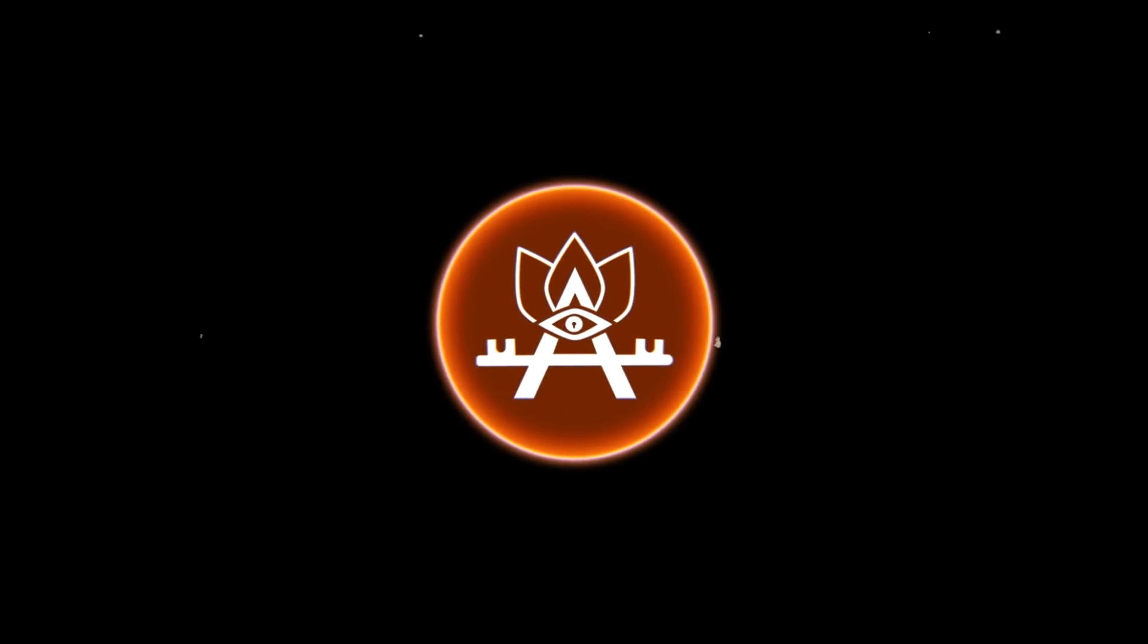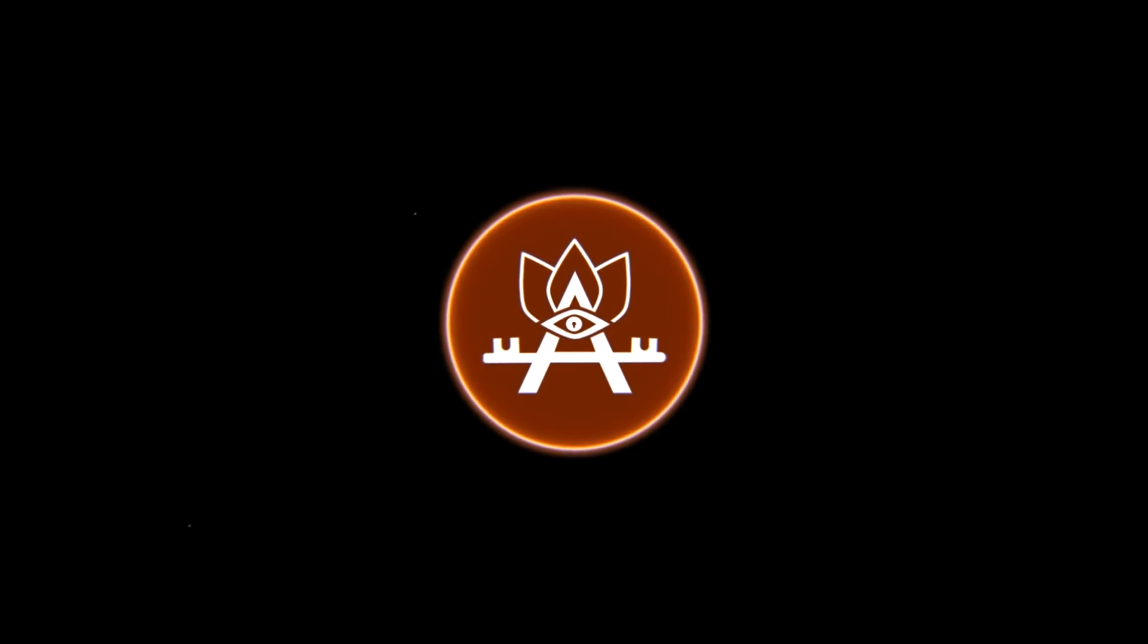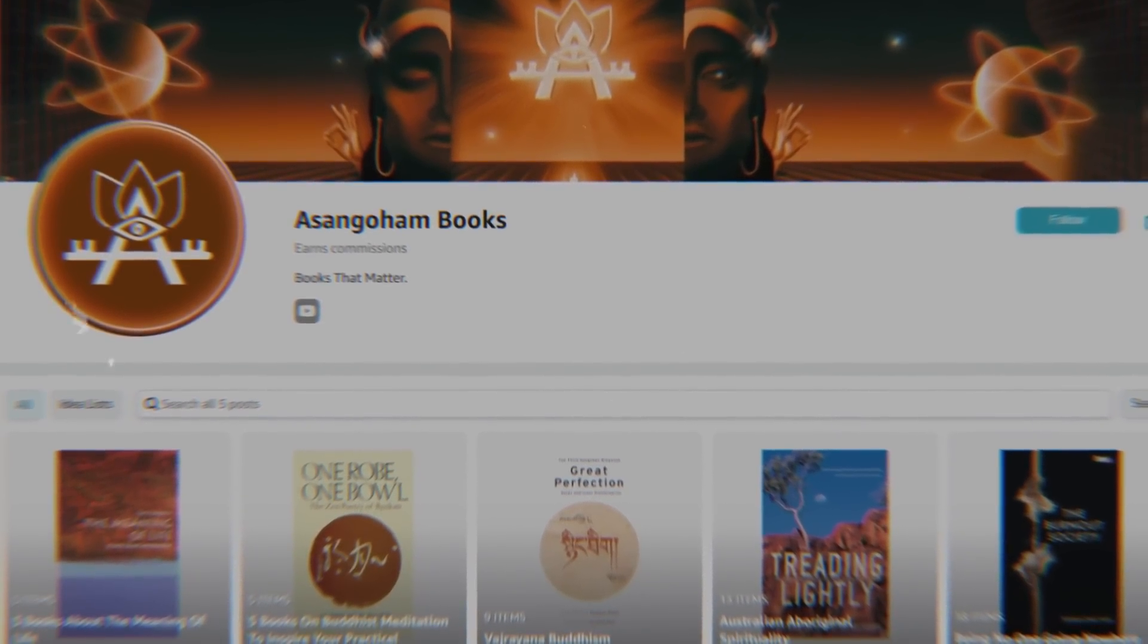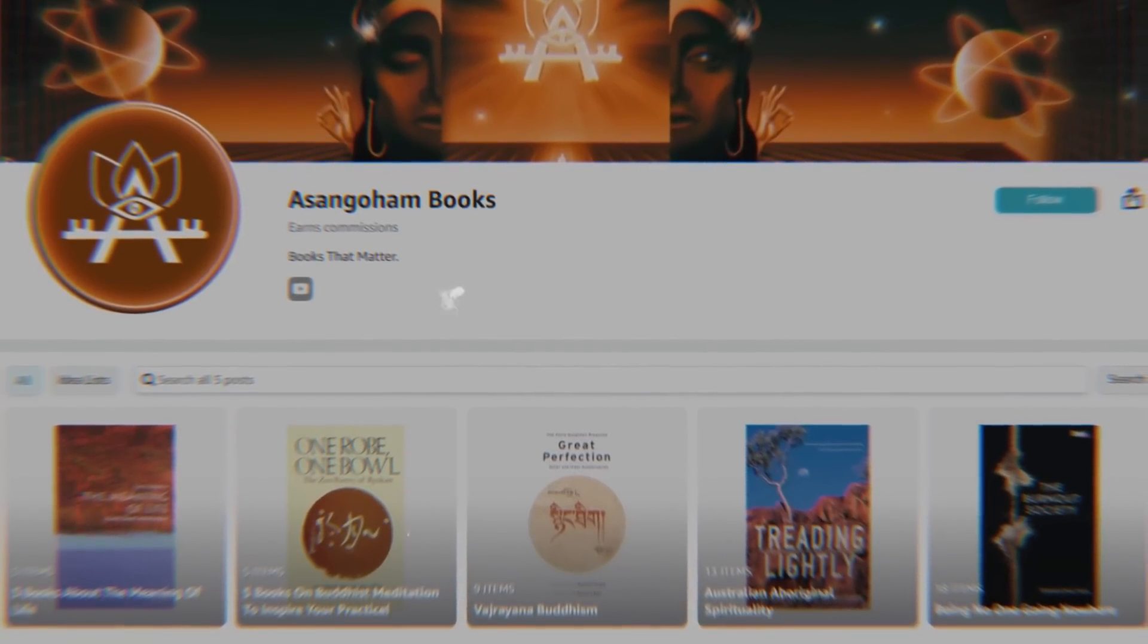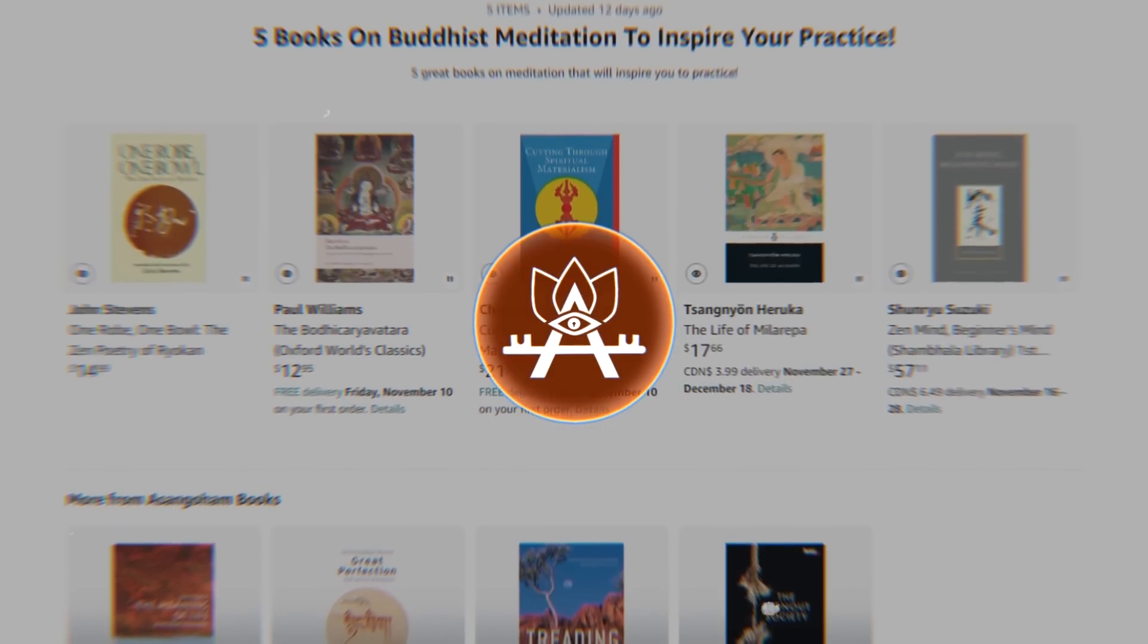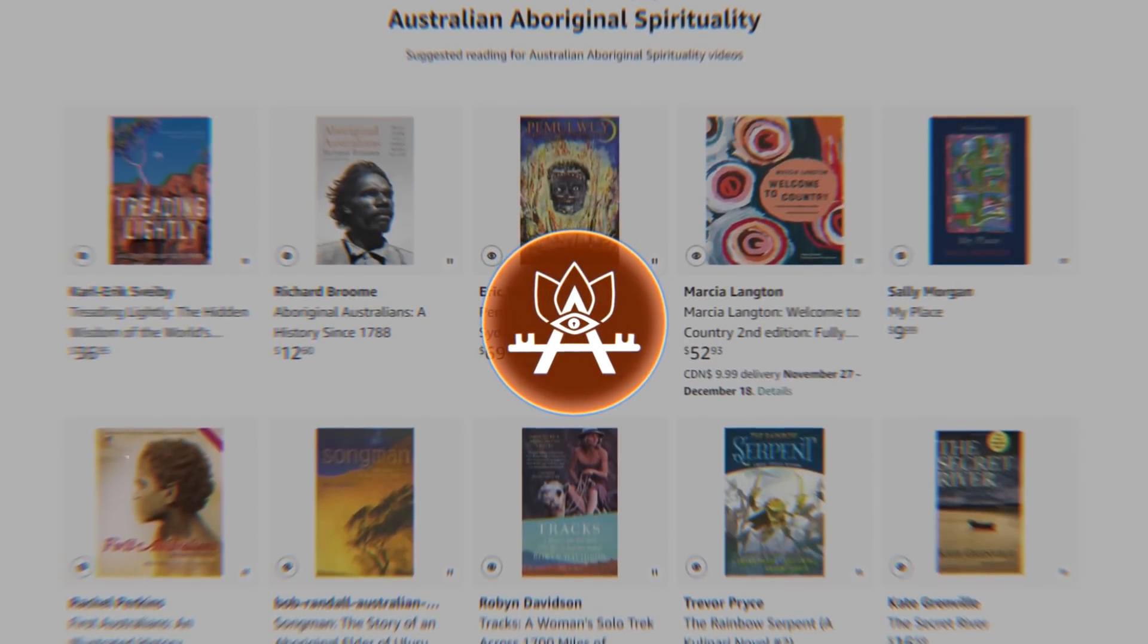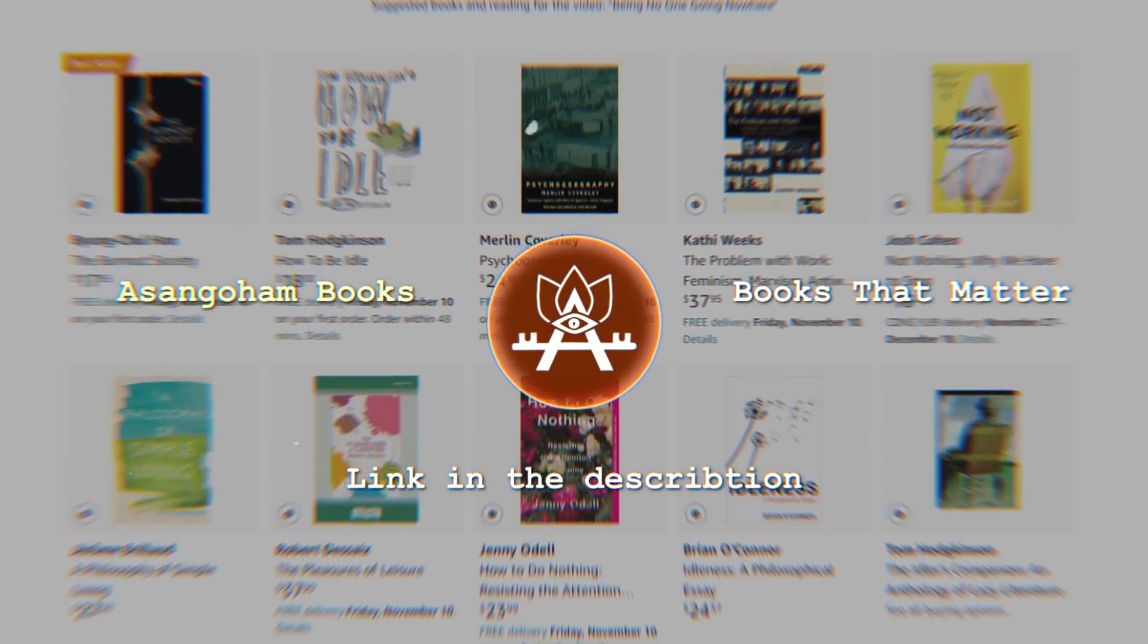If you find this video on artificial intelligence and its possible evolution to Godhood interesting, please visit our online bookstore, Asangaham Books, where you will find curated book lists on the topic of this video, as well as lists created on the topics of previous videos. Asangaham Books also has a range of books on philosophy and spirituality. The books are available as hard copies, paperback, digital copies, and audiobooks. You can find the link to Asangaham Books in the description of this video. Thanks.